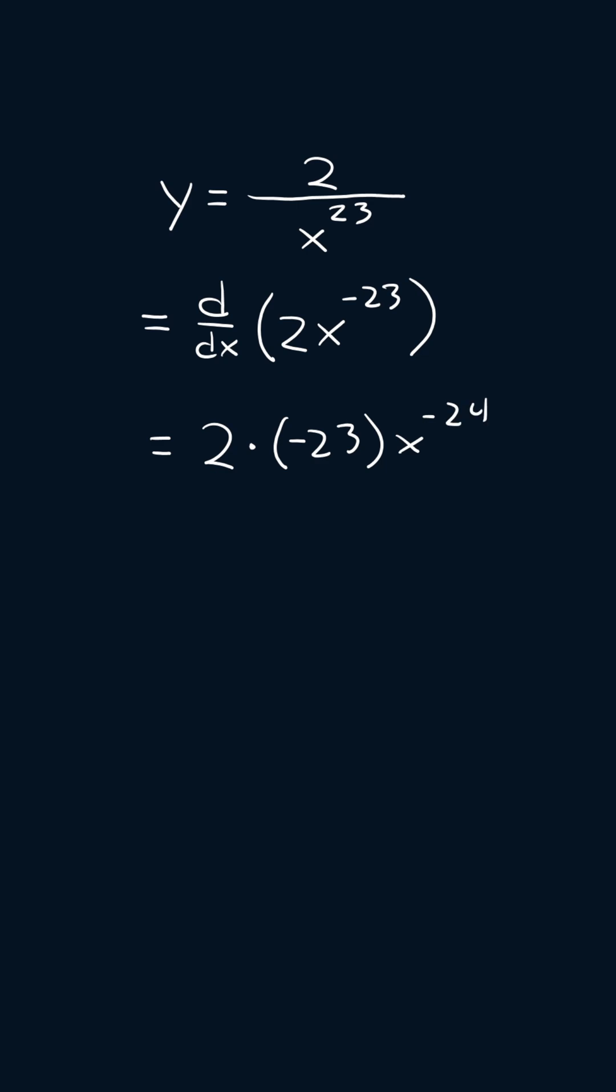This will simplify to negative 46x to the power of negative 24, which we can then apply the exponent rule, and we're going to get negative 46 over x to the power of 24, and that is our answer.